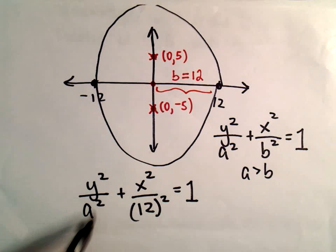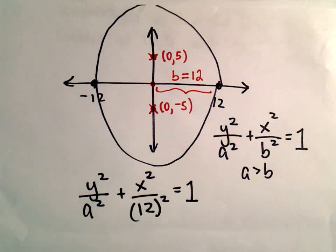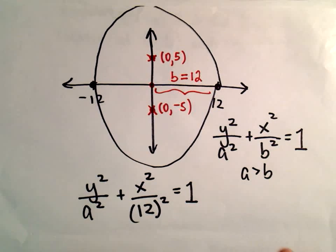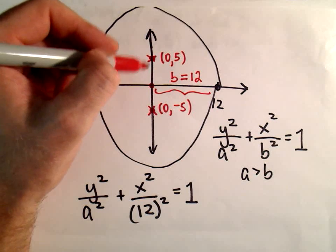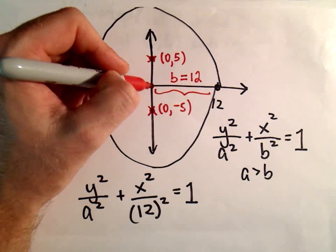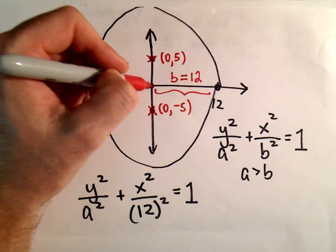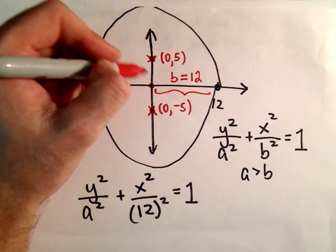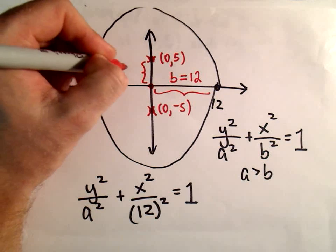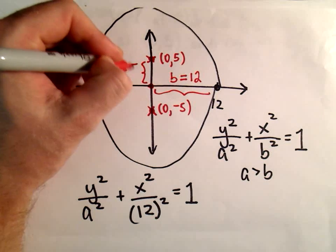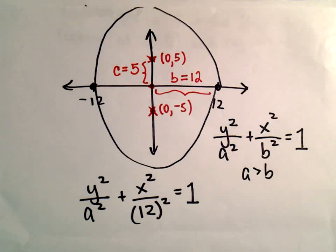So the only value we're really missing here is the value a. But we have our foci and we can use that information. If we look at the distance from where it's centered, which is at the origin, to one of the foci, that's going to be our value c. So in this case our c value is going to be 5.